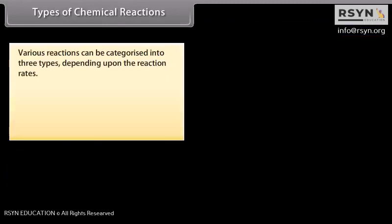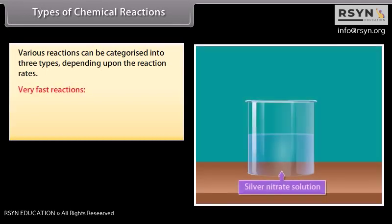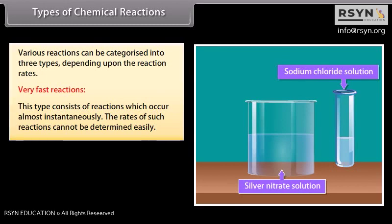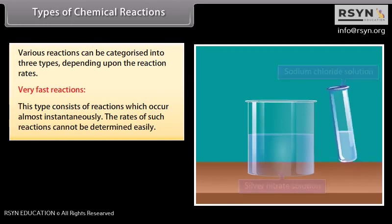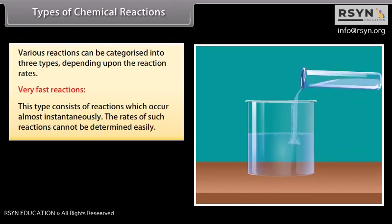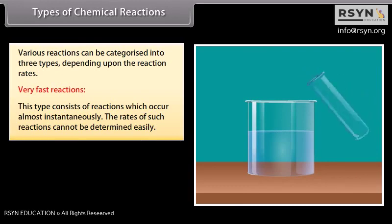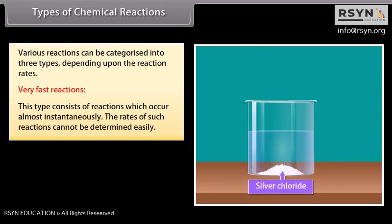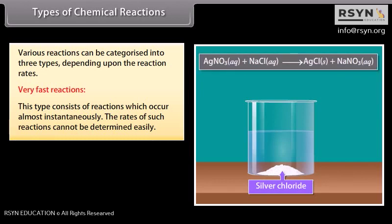Various reactions can be categorized into three types depending upon the reaction rates. Very fast reactions: this type consists of reactions which occur almost instantaneously; the rates of such reactions cannot be determined easily. For example, the precipitation of AgCl occurs instantaneously by addition of aqueous solution of sodium chloride to aqueous solution of silver nitrate.